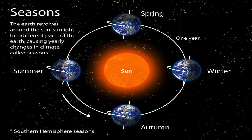The Earth moves around the sun in a fixed path called orbit. Earth apne fixed path pe ghumti rehti hai — that is its orbit. And this movement is called revolution.